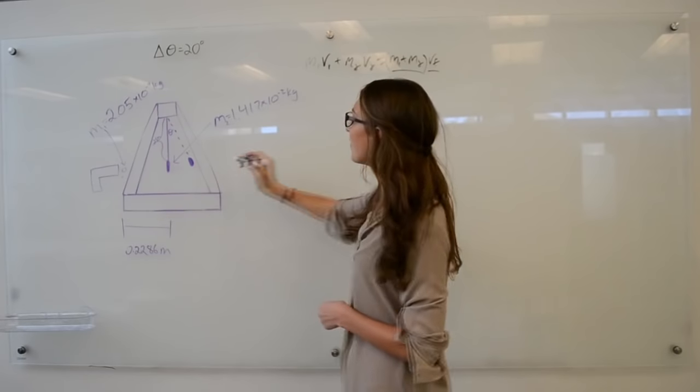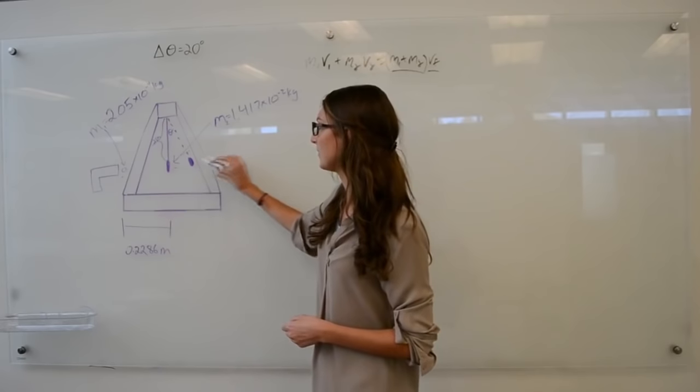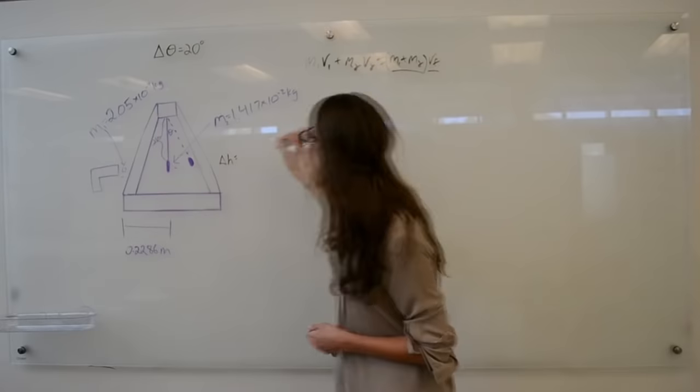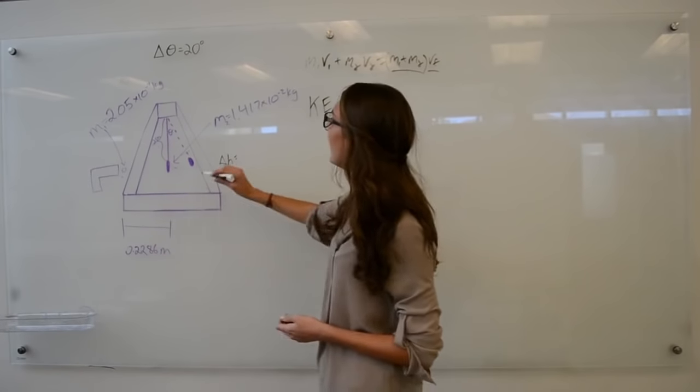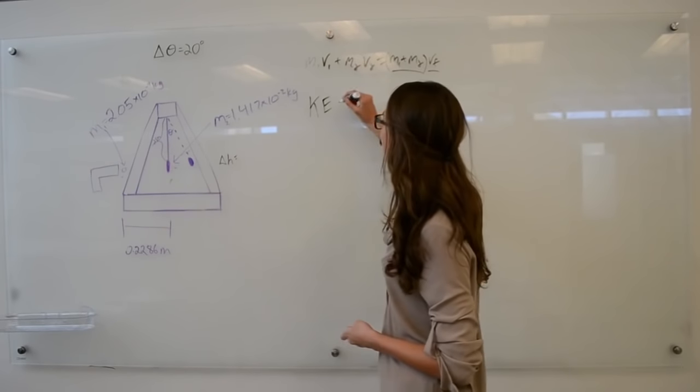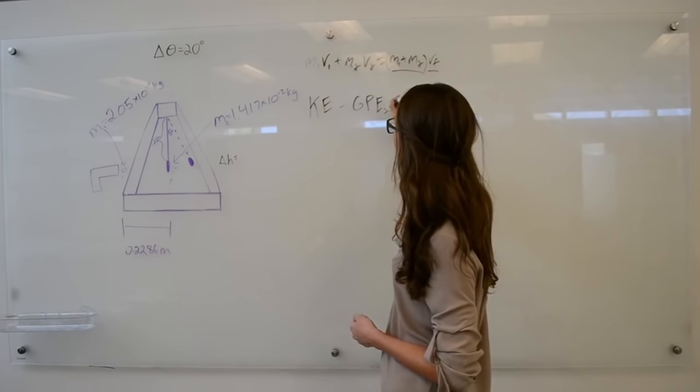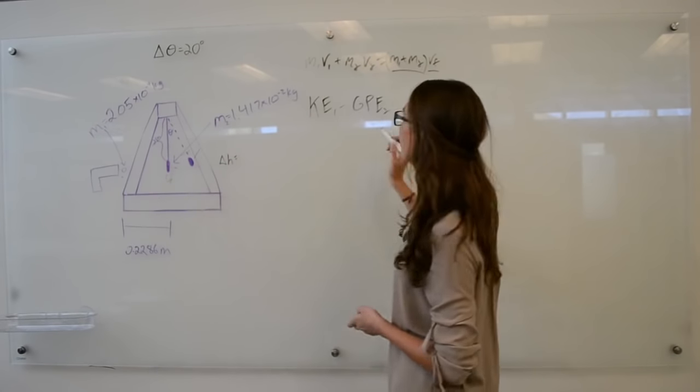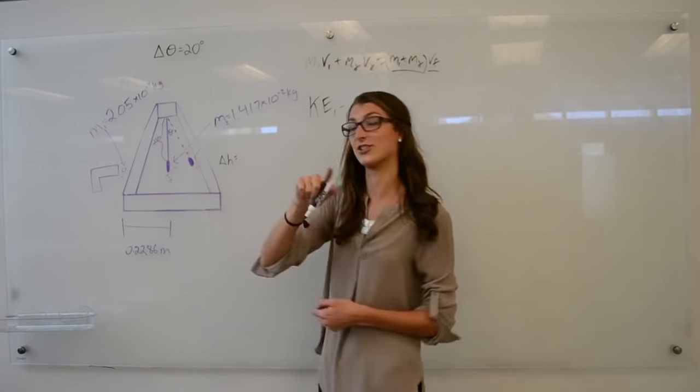We know that the distance that our structure moves up, delta H. We know that the kinetic energy given by the bullet at the bottom here is equal to the gravitational potential energy. So here it has kinetic energy and then here it has potential energy. We know that all of this kinetic energy is transferred to potential energy because energy is conserved.